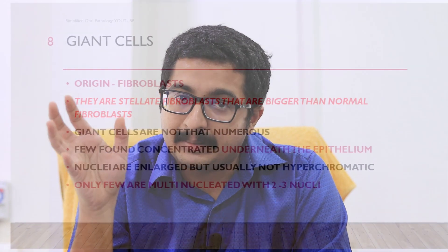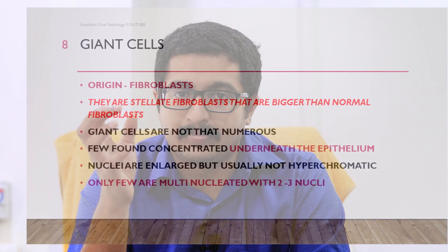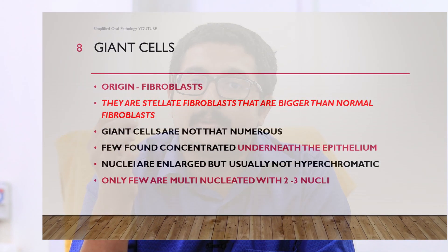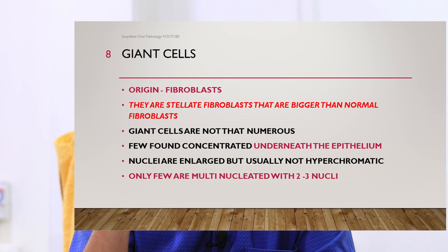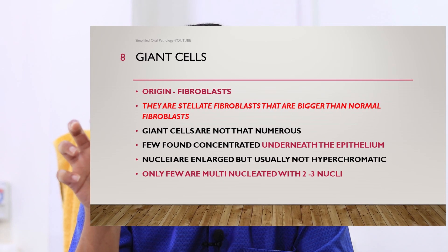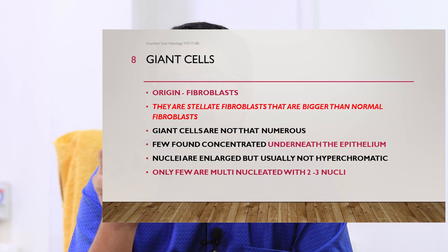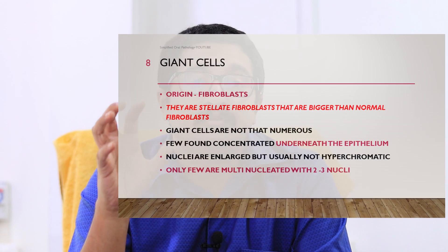Now let's address the elephant in the room — giant cells. In oral pathology, giant cells are a huge topic with a huge variety of giant cell lesions. For the purpose of this discussion, giant cells are formed when two or more single cells come together, cluster, and form one giant cell. This new giant cell has more than one nucleus — that is, they are multinucleated. Because of their huge size and multiple nuclei, they are referred to as bizarre or giant cells. In giant cell fibroma, the source of the giant cells is fibroblasts — fibroblasts come together and form one single giant cell.